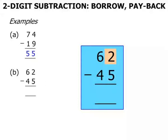We look at the 2. We need to borrow 1 and pay back 1. So at the top there, that's now 12. We've got 12 minus the 5 and that's 7.